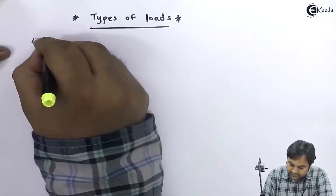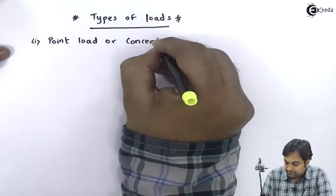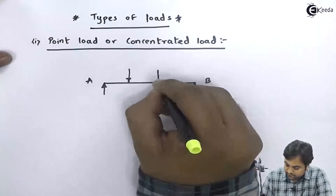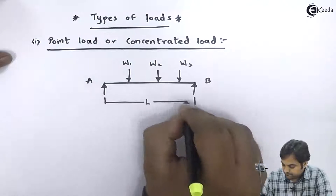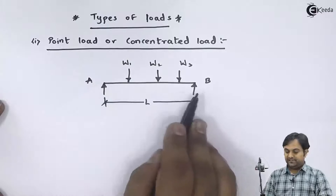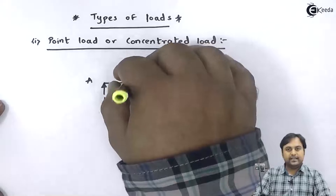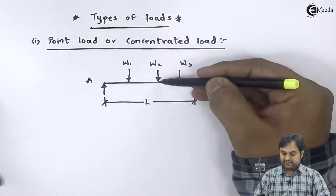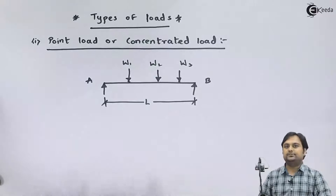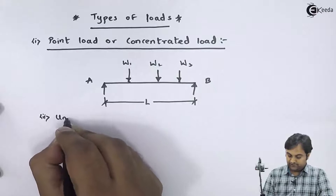The first type is point load or concentrated load. As we see in the diagram, here we have a simply supported beam supported at A and B. If the loading acts at a point — W1 is acting at a point, W2 is acting at a point, similarly W3 — since the load is acting at a single point, it is called a point load or concentrated load.